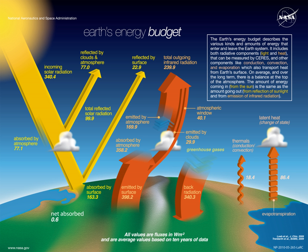Since the absorption varies with location as well as with diurnal, seasonal and annual variations, the numbers quoted are long-term averages, typically averaged from multiple satellite measurements. The approximately 340 W per square meter of solar radiation received by the Earth—an average of approximately 77 W per square meter is reflected back to space by clouds and the atmosphere, and approximately 23 W per square meter is reflected by the surface albedo—leaves approximately 240 W per square meter of solar energy input to the Earth's energy budget. This gives the Earth a mean net albedo of 0.29.